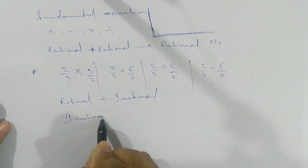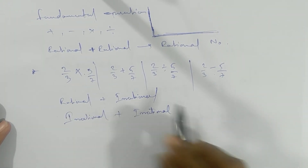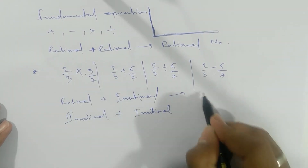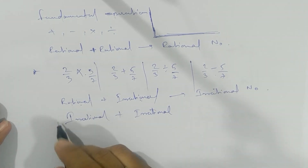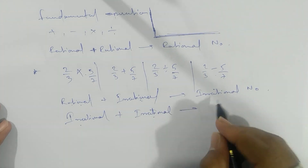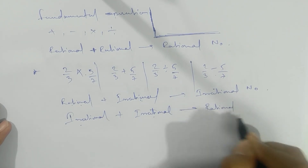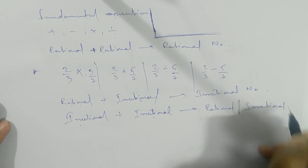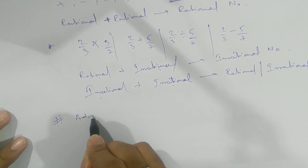So rational plus rational, or irrational plus rational, will always give you a rational number. But if we take two irrational numbers, then the result may be rational or irrational. Let's first go for the addition operation.